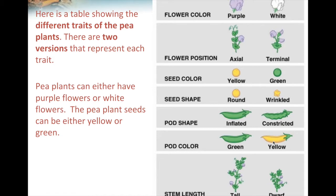What Mendel did was he experimented on the pea plants to see what the offspring would look like. He took one parent that had purple flowers and another parent that had white flowers and made them reproduce. He took the pollen from one flower and the egg from the other, and he wanted to see what the offspring would look like — would they have purple flowers or white flowers? He did this for all of the traits.